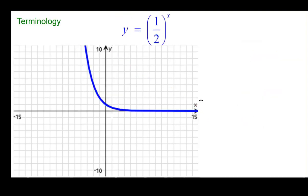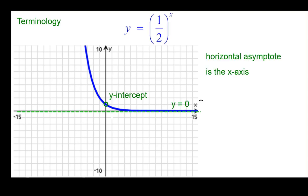So some terminology. For this we do have a y intercept at one. We also have y equals zero, a horizontal line which is an asymptote, which is also the x axis. Boundary line.